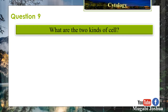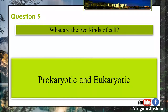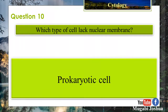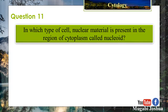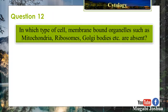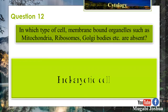Question 9: What are the two kinds of cells? Prokaryotic and eukaryotic. Question 10: Which type of cell lacks a nuclear membrane? Prokaryotic cell. Question 11: In which type of cell is nuclear material present in the region of cytoplasm called the nucleoid? Prokaryotic cell. Question 12: In which type of cell are membrane-bound organelles such as mitochondria, ribosomes, and Golgi bodies absent? Prokaryotic cell.